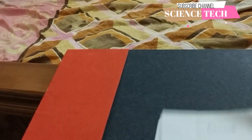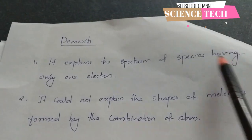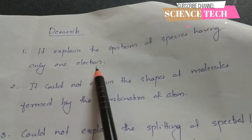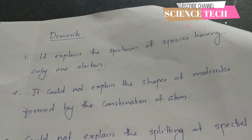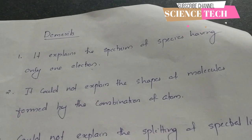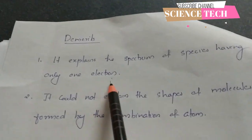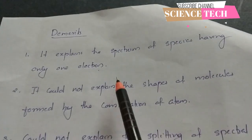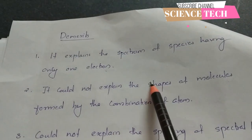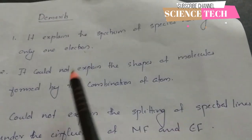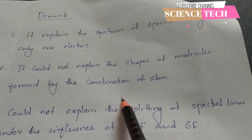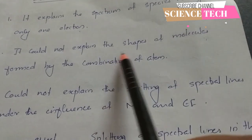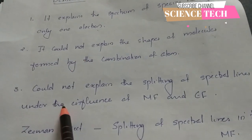The demerits of the Bohr model: it only explains the spectrum of species having one electron, like hydrogen. It fails for multi-electron species and cannot explain chemical bonding or molecular shapes.